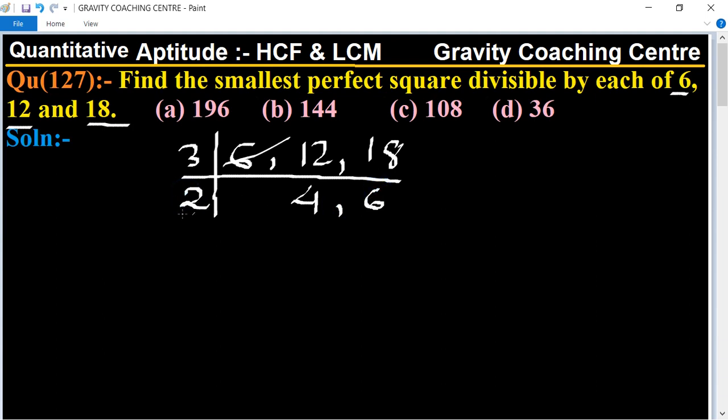Table of 2: 2 threes are 6 and 2 twos are 4. Therefore, LCM equal to 3 multiplied by 2 multiplied by 2 multiplied by 3.